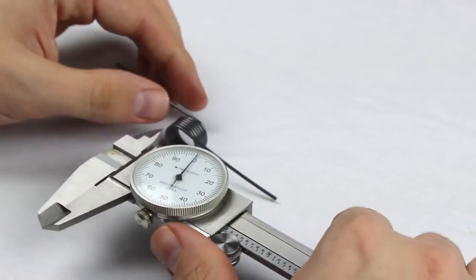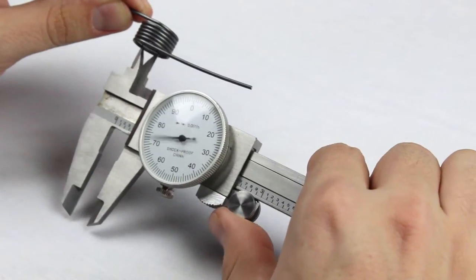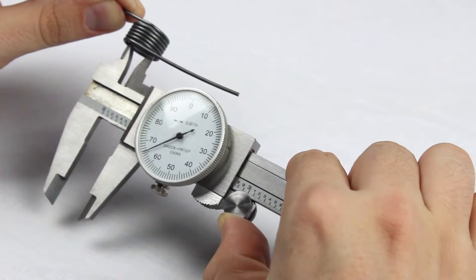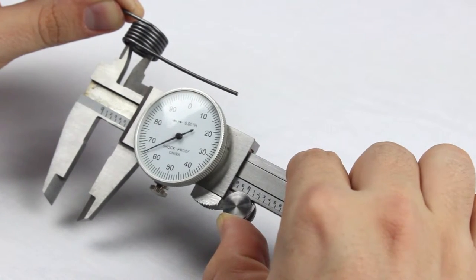The inside diameter, or ID, is hard to measure accurately. So use the outside diameter whenever possible. For this spring, the ID is .565 inches.